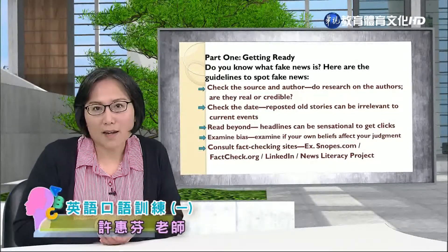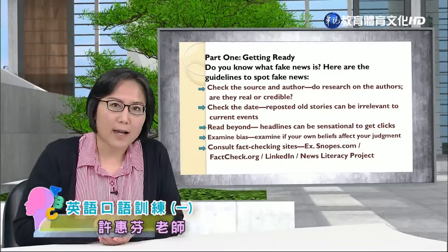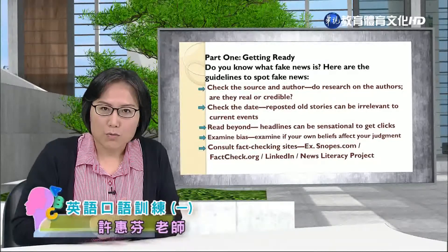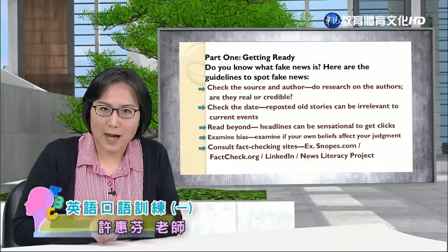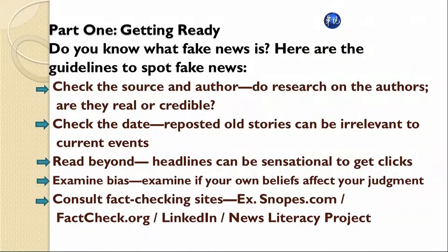Here are the guidelines to spot fake news. 以下这些帮助大家来找到何谓假消息. First one, you can check the source and author. 首先你可以做到的就是，我们要来检查那个作者还有他的资料来源.